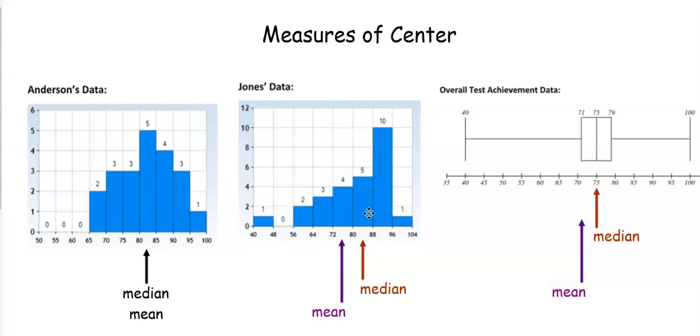Since this data is skewed to the left that means we have these low extreme values that are pulling the mean left which means that the mean would be lower than the median. I could approximate that it would be probably somewhere between 72 and 80 but I know with confidence that it is definitely lower than the median.